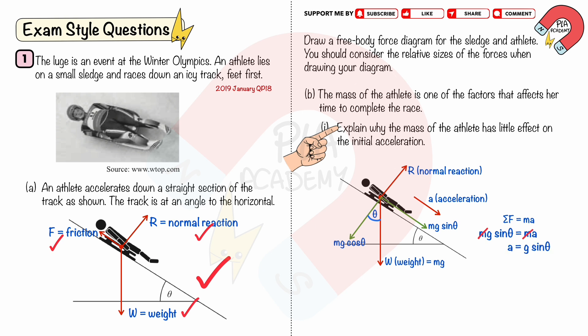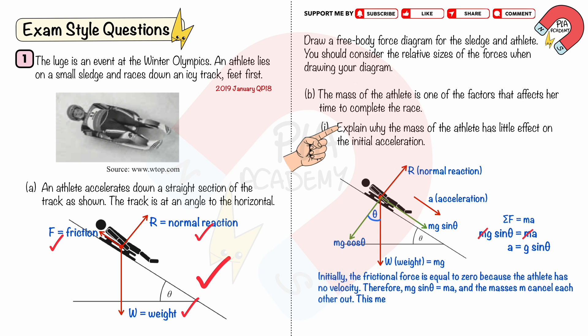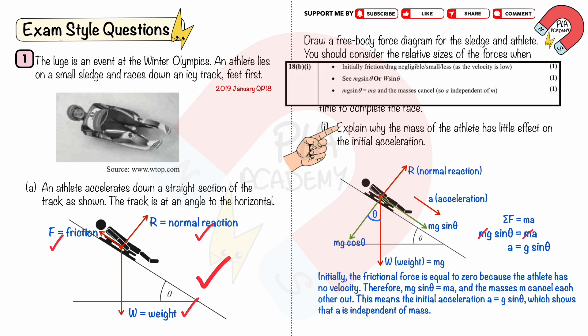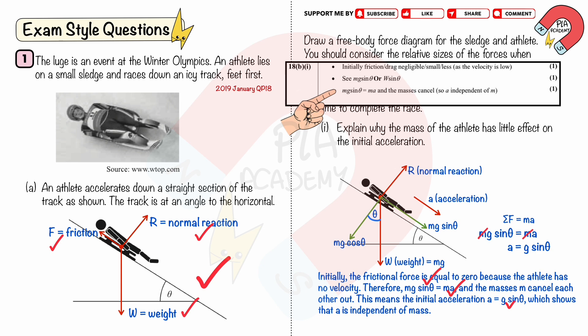We can explain that initially the frictional force is zero because the athlete has no velocity. Therefore mg sinθ = ma, and the masses cancel each other out. This means the initial acceleration a = g sinθ, which shows that acceleration is independent of mass. You get 3 marks for: initial friction equals zero, mg sinθ = ma, and the masses cancel.